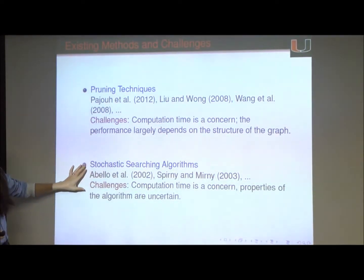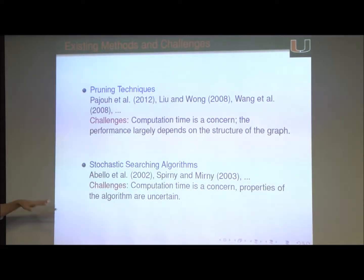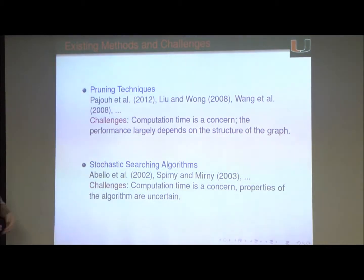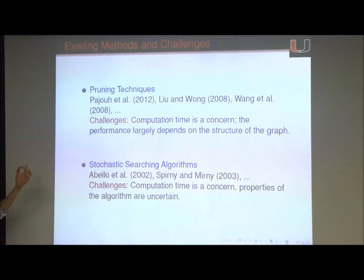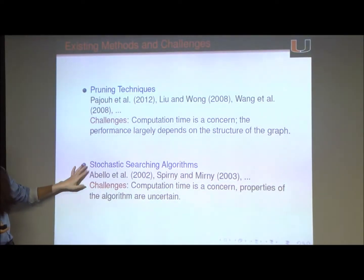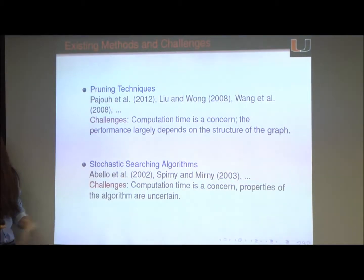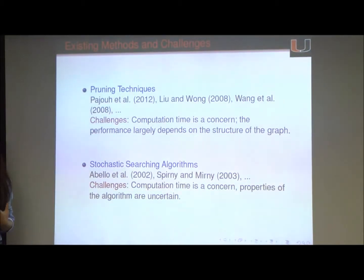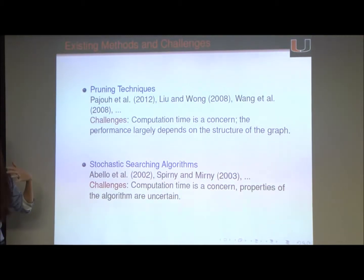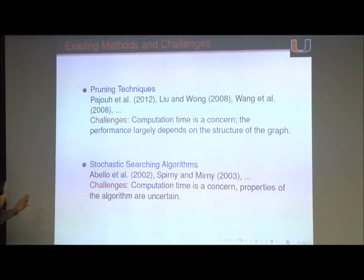Another class of techniques is the stochastic search algorithm, which includes the more classic hill climbing algorithm, MCMC, or some modified local search algorithms tailored to this problem. For stochastic search algorithms, one challenge is computation time. Another is that since many of these algorithms are very ad hoc, the properties of the algorithm are uncertain — we can give them a network and get an output, but we don't really know theoretically how well we should expect the algorithm to perform.